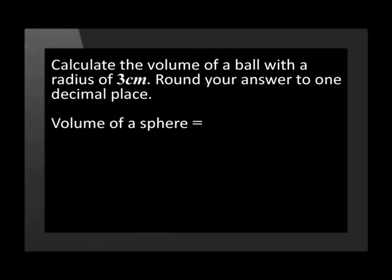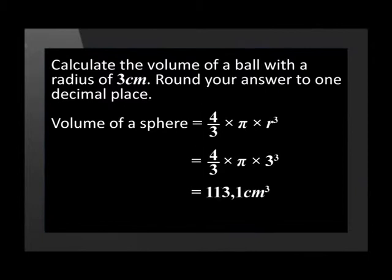We start with the formula for the volume of a sphere and then fill in the value of the radius. Now we have 4 over 3 times pi times 3 cubed which is equal to 113.1 centimeters cubed. Wasn't that simple?